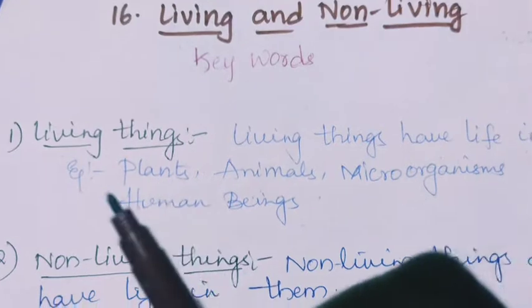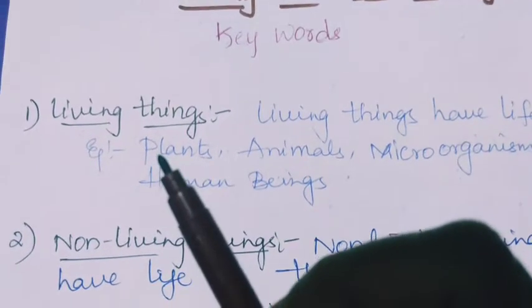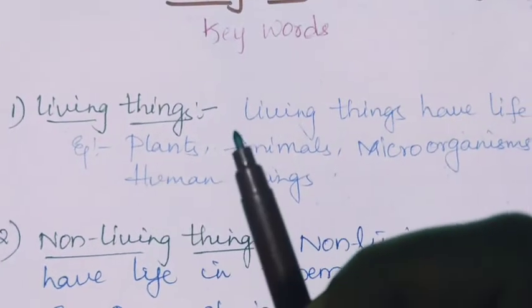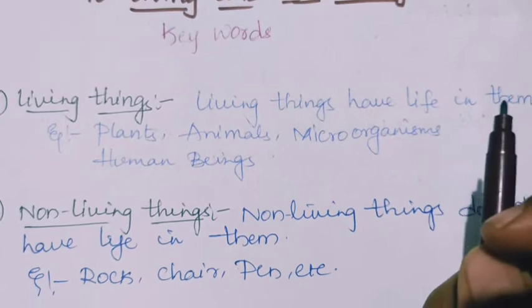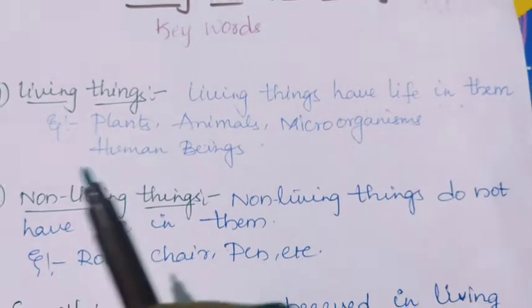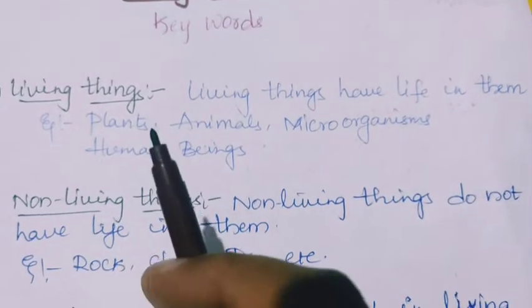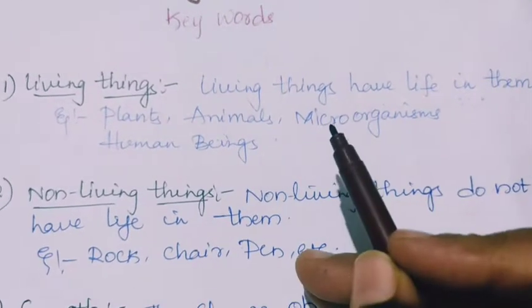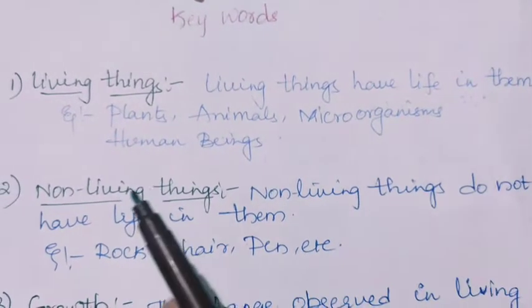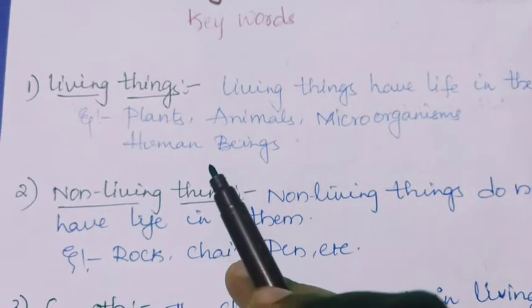Look at the first keyword, children: living things. Living things have life in them. For example, plants, animals, microorganisms, human beings.